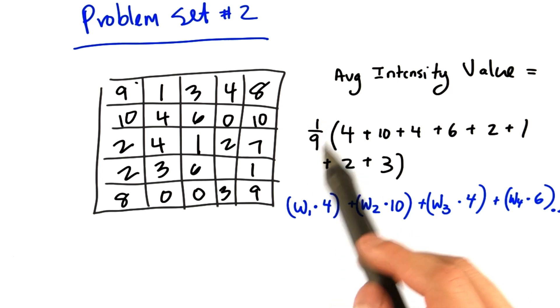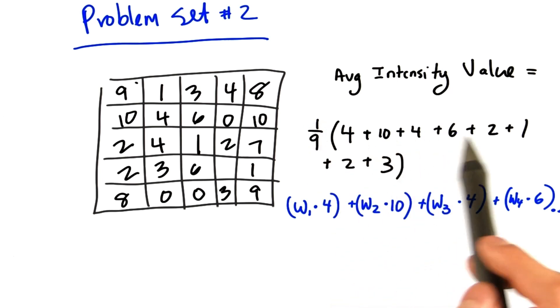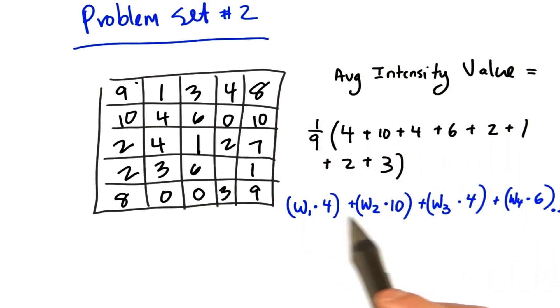So rather than multiplying one-ninth to each pixel value here, we will multiply each pixel value by a different weight. So W1 is different than W2, and W2 may be different than W3, and W3 may be different than W4. And that is the approach that we will take in problem set number two.